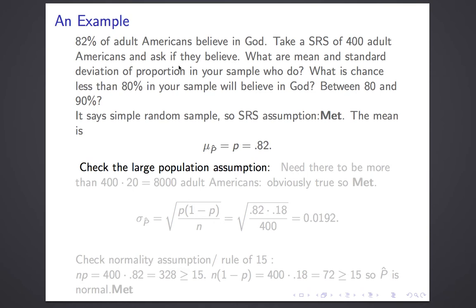Next, let's check the large population assumption. We need the population to be more than 20 times the sample size. The sample size is 400, so we need the population to be at least 8,000. Of course, there are way more than 8,000 adult Americans, so that assumption is met.